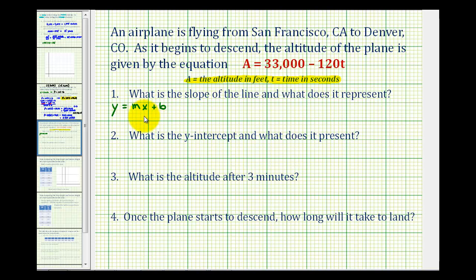So if we wanted our linear equation to fit this form exactly, we could write this as A equals, we'll put the X term first, so it'll be negative 120T and then plus 33,000.